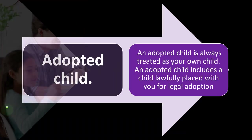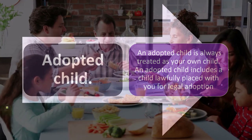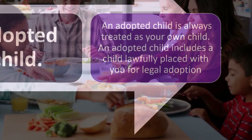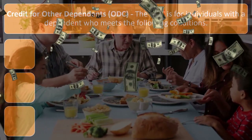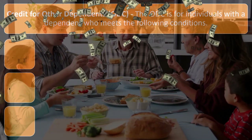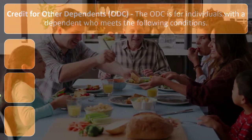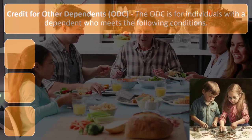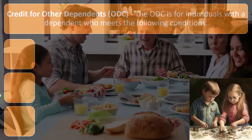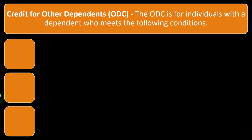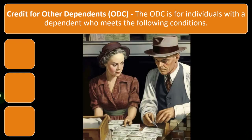An adopted child is always treated as your own child. An adopted child includes a child lawfully placed with you for legal adoption. For the ODC (Other Dependent Credit), remember the strategy: if someone qualifies as a dependent but doesn't qualify for the child tax credit, you may be able to get the Other Dependent Credit — much less, but still beneficial.